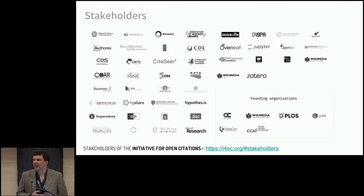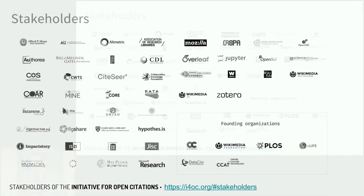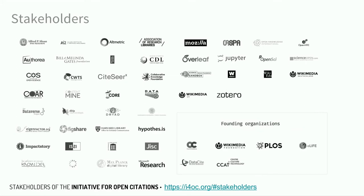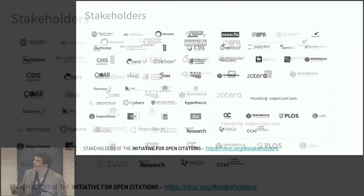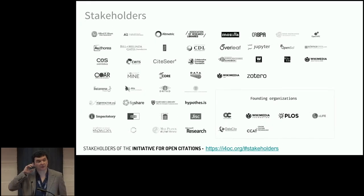In the process, we also realized it's really important to get the word out and amplify the message. What was really important was not just talking to publishers, but building a coalition of allies including major funders, scholarly platforms, open data organizations, and publishers as well — supporting the notion of unrestricted availability of scholarly citation data. This is the list of organizations that have agreed to lend their name and authority to support this initiative.